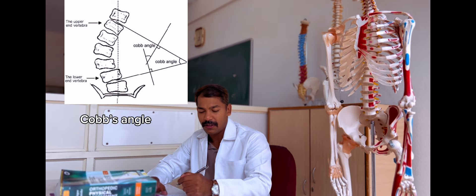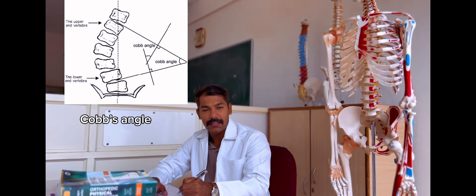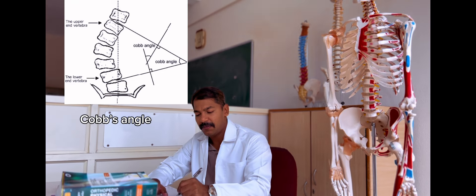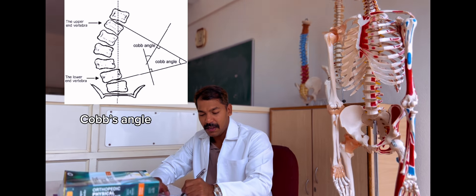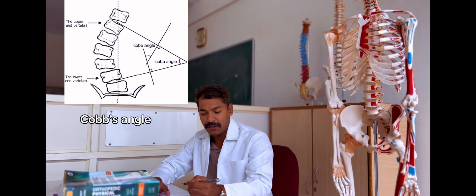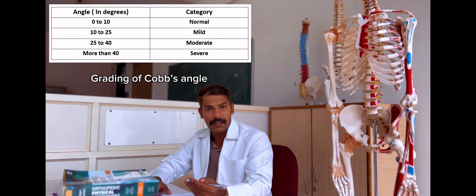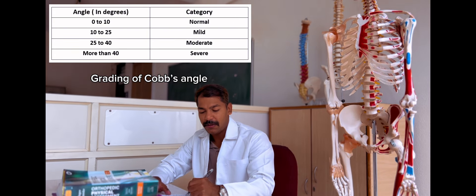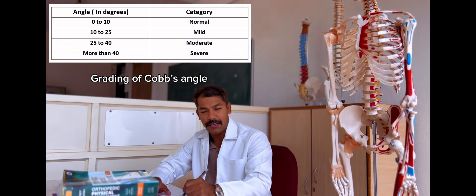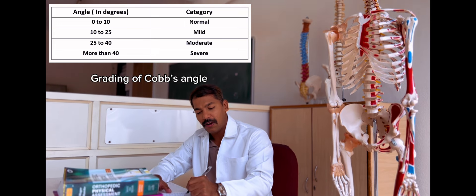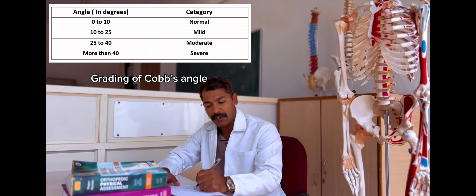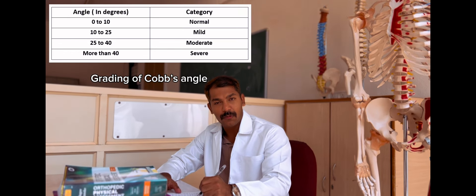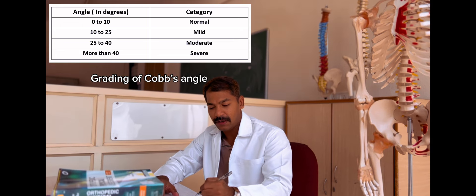The Cobb's angle is the angle made by the line passing through the primary curve and the line passing through the secondary curve. The grading is classified as mild, moderate, and severe: mild is 10 to 25 degrees, moderate is 25 to 40 degrees, and severe is anything more than 40 degrees of Cobb's angle.